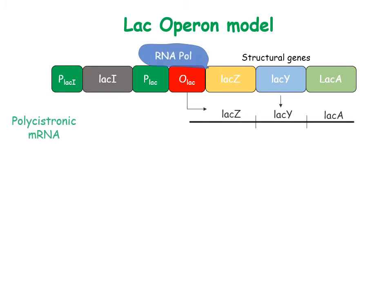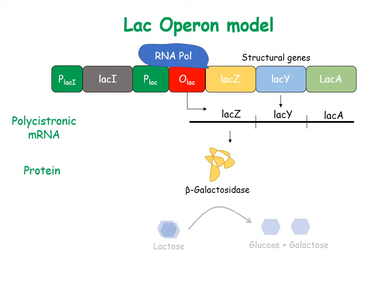RNA polymerase transcribes the whole operon as polycystronic mRNA, which is translated into three different proteins. The first is beta-galactosidase, which hydrolyzes lactose into glucose and galactose. It also forms allolactose, which acts as the inducer for the LAC operon.